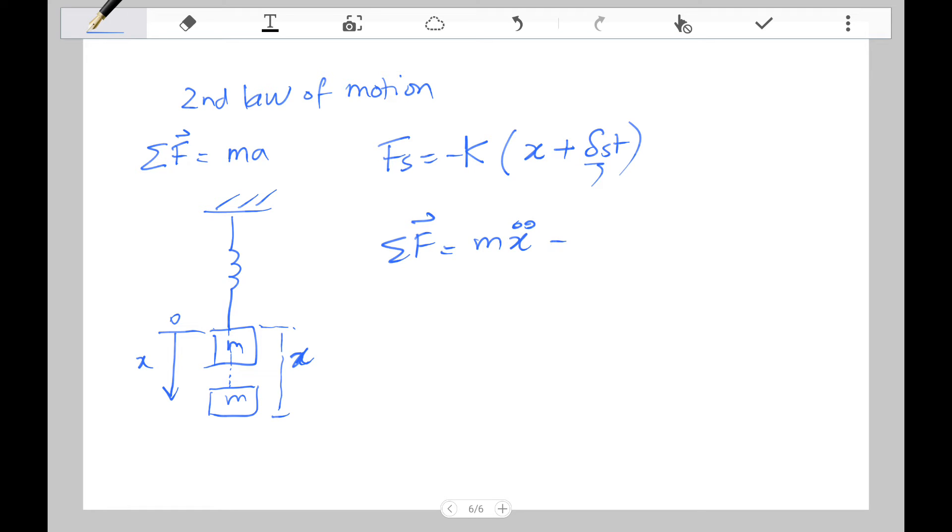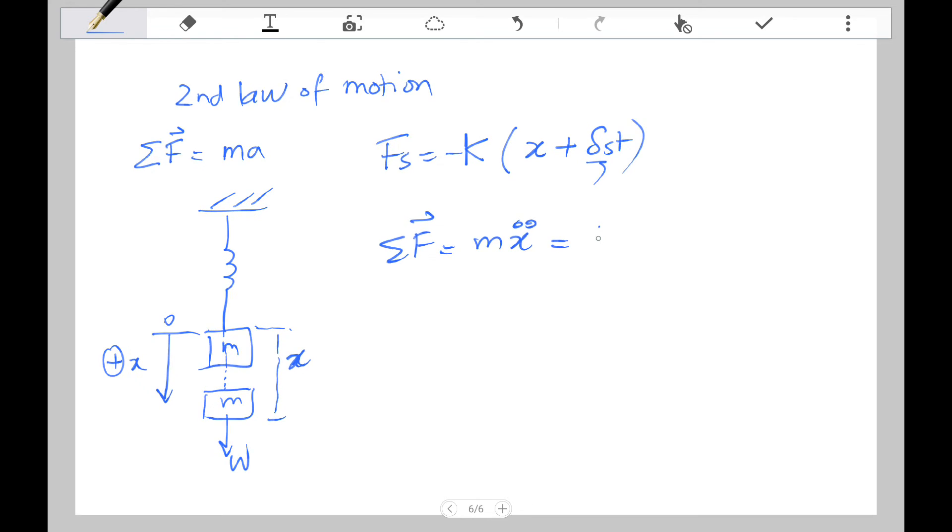So now when we do the sum of forces, mx double dot - in this case downward would be positive, so the spring, that's your fs, it's going to be negative fs plus the weight which is acting down. So mx double dot equals negative k times (x plus displacement) plus the weight. Let's bring the k into the equation: negative kx minus k displacement plus the weight.